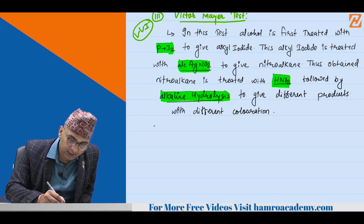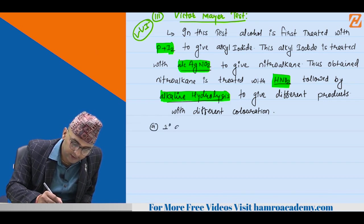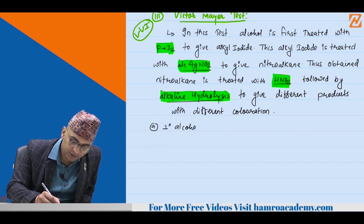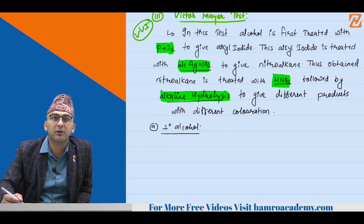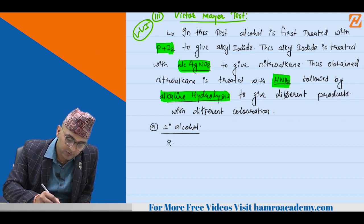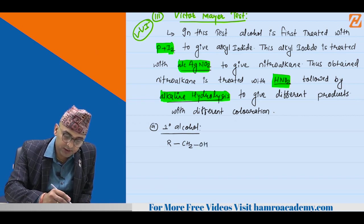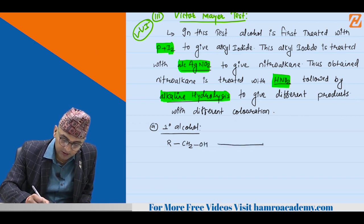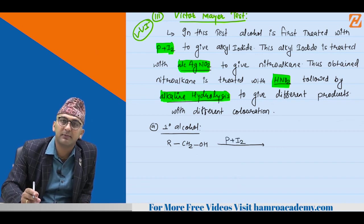Let's start individually. Number A: primary (1 degree) alcohol reaction. General primary alcohol is R-CH2-OH. It is first treated with P plus I2. P plus I2 means PI3 directly — PI3 is relatively unstable, so P plus I2 is used — to give R-CH2-I, the alkyl iodide.